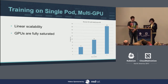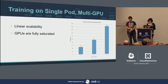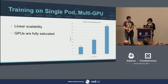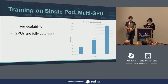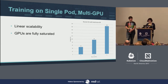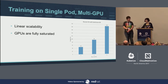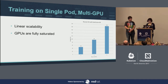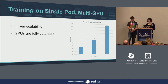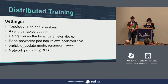On a single pod with multiple GPUs, you can get pretty good linear scalability. Showing ResNet as an example, the same predictable linear scalability applies to many different models we tested — VGG16, Inception V3, GoogLeNet, different versions of ResNet. They all scale from one GPU to two to four on a single node pretty nicely, and all the GPUs are fully saturated, which means you're not wasting your GPU resources.